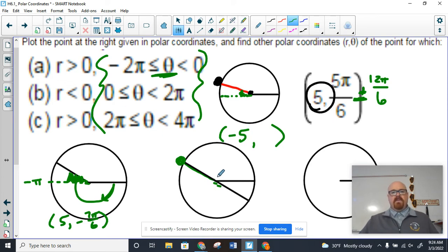So in order for the point to get pushed back in that direction with a negative R value, we have to label this angle right here. So what angle shares this diameter with 5π/6? It's down here at 11π/6.